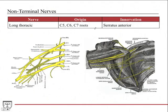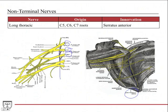The long thoracic nerve comes off the C5, C6, and C7 roots — a branch from each root forms the nerve. It travels along the serratus anterior, which is the muscle it innervates. The serratus anterior is sometimes called the boxer's muscle; it stabilizes the scapula against the thoracic cage.